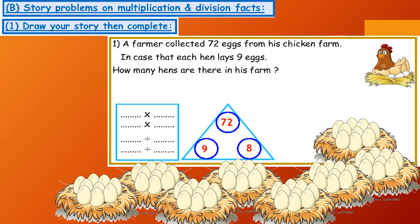8 hens. Each one lays 9 eggs. So, 9 by 8 equals 72, 8 by 9 equals 72, 72 divide 9 equals 8, and 72 divide 8 equals 9.